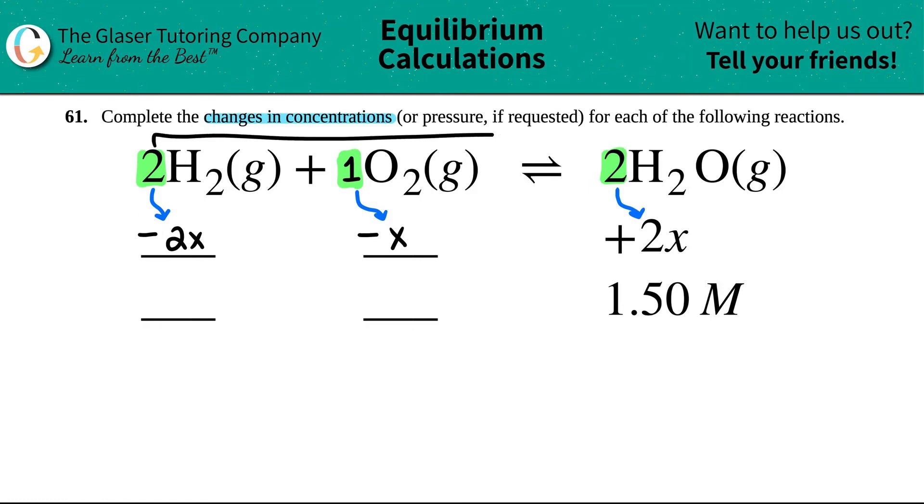It's a 2 to 2 ratio, aka a 1 to 1 ratio. So this would be decreasing by 1.50 molarity. Now we just got to figure out what this one is. It's not going to be the same as 1.50 because the ratio is not the same. But I can basically solve for what X is. And then I know what X is and I can plug it in.